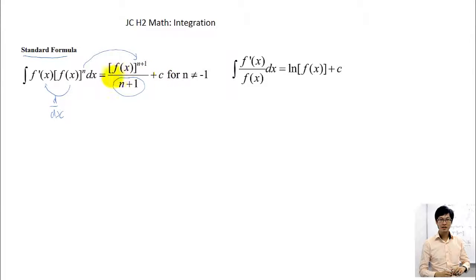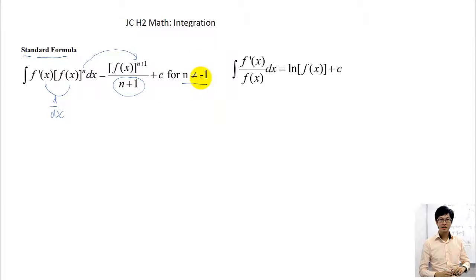So once again, when the outside function is the derivative of the inside function, there are just two steps. The first step is power plus 1 — n becomes n plus 1 — and the second step is you divide by the final power. Don't forget to put plus c. This formula only applies for n not equal to minus 1, because when n is minus 1, minus 1 plus 1 is 0, and you can't divide by 0. So when n is minus 1, I will need to apply a second formula, which I'll go through later. Let's cover a few examples for this first formula.